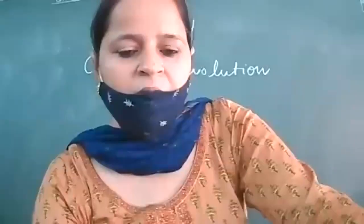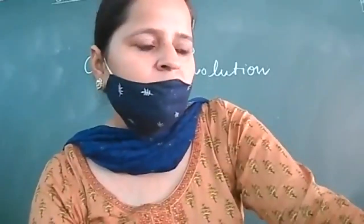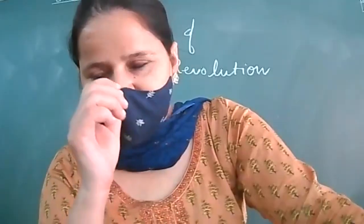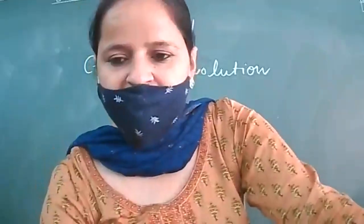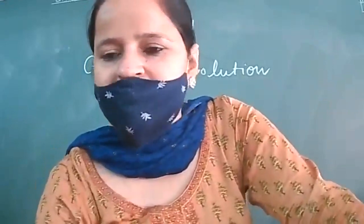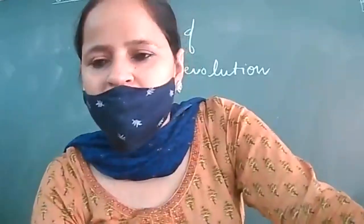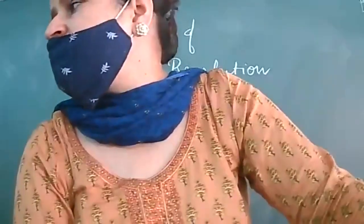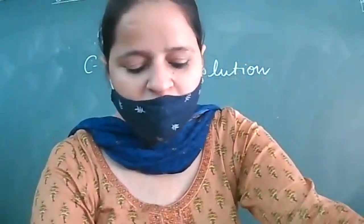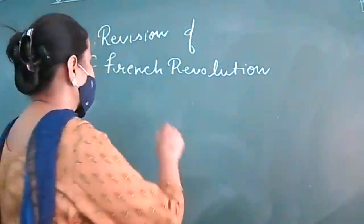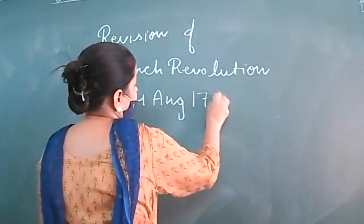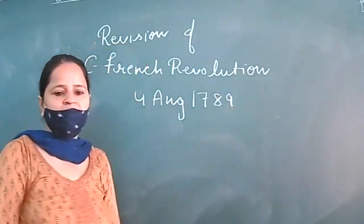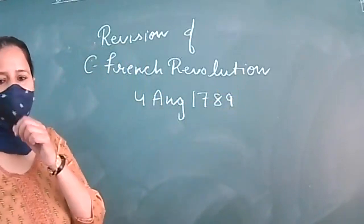Today I will discuss after the revolution of France 1789, on which date Louis XVI ordered to abolish the feudal system. The important date is 4th August 1789. King abolished the feudal system.